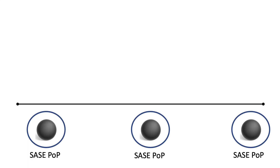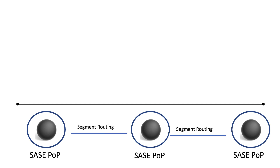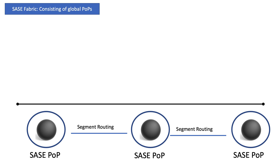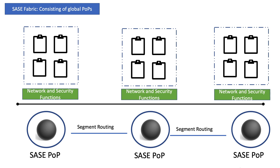SASE consists of POPs or data centers that are located around the globe, and in the case of Cisco SASE there are around 32 of these. Each of these POPs will be placed into a region and all of these POPs connect together to create what's known as a fabric, which is nothing more than a mesh of connectivity. We will have POPs because we want these networking and security services to be closer to the users. So if for example you're in Dublin, you'll want to get to a POP in Europe as opposed to the US, and each of these POPs will have both networking and security services delivered like a software as a service solution.